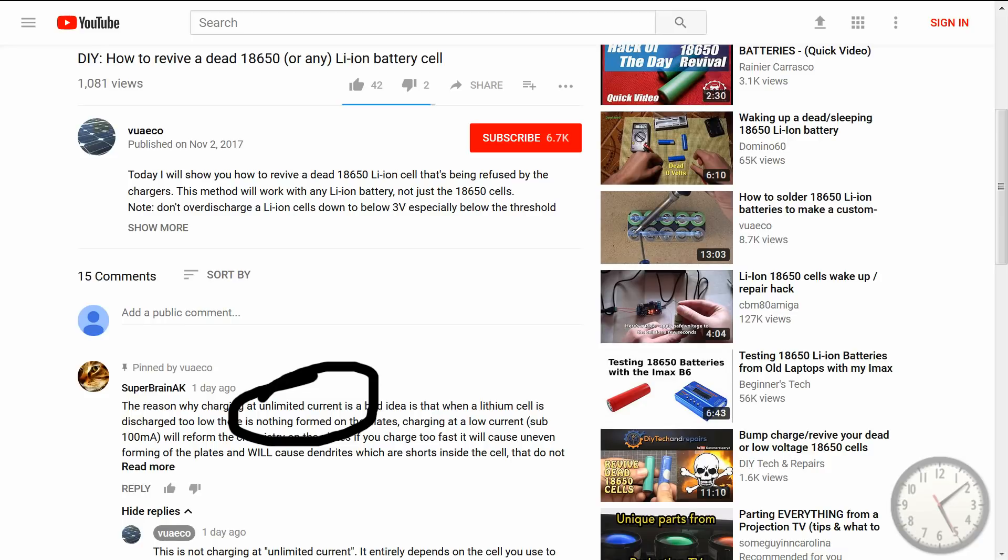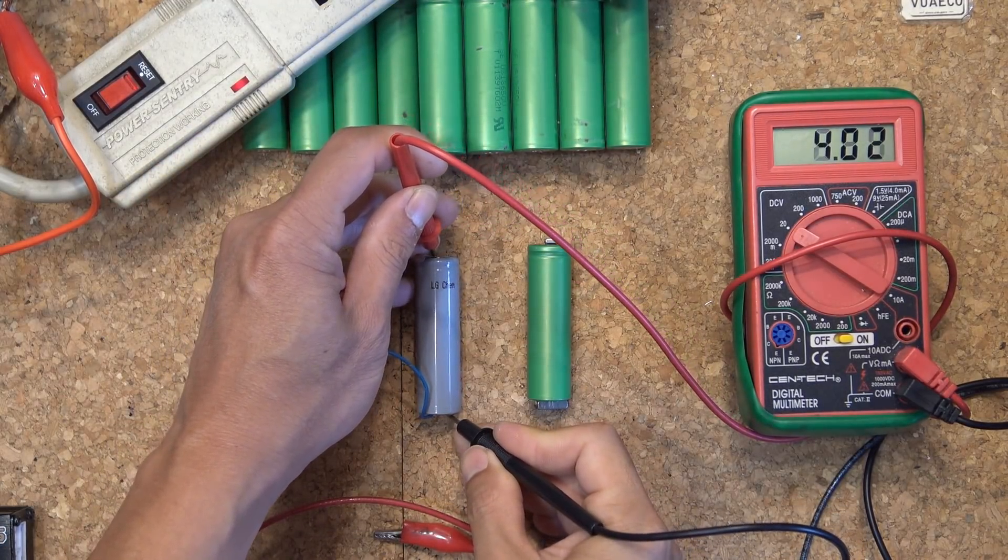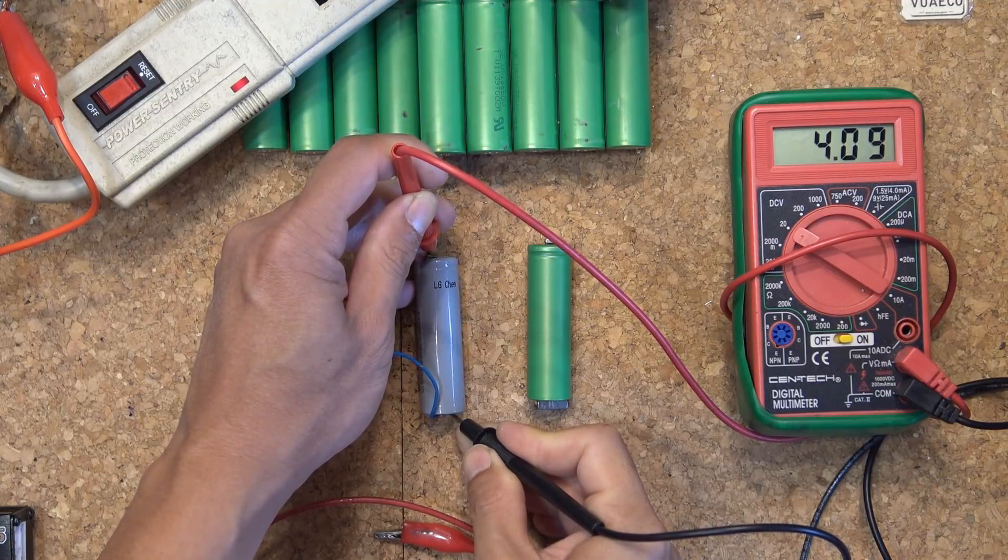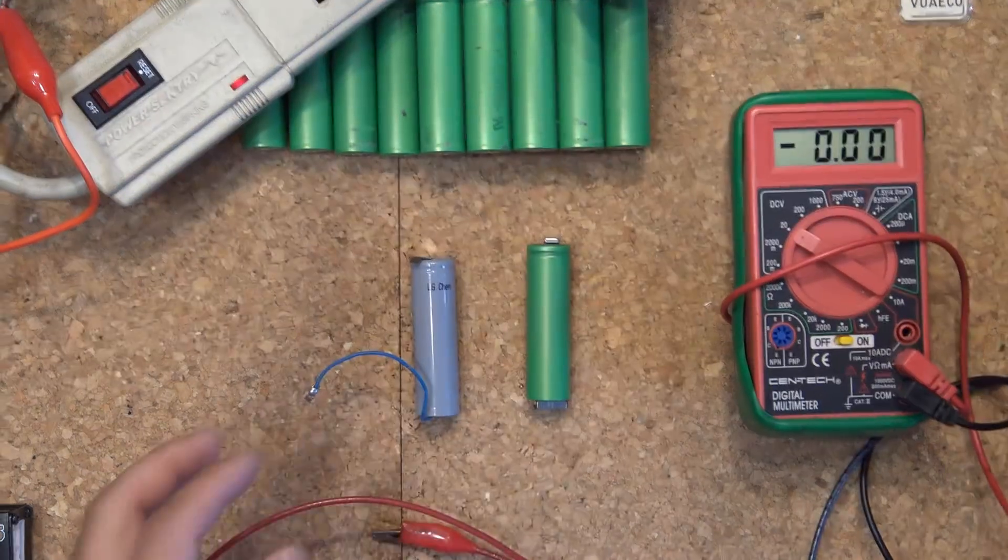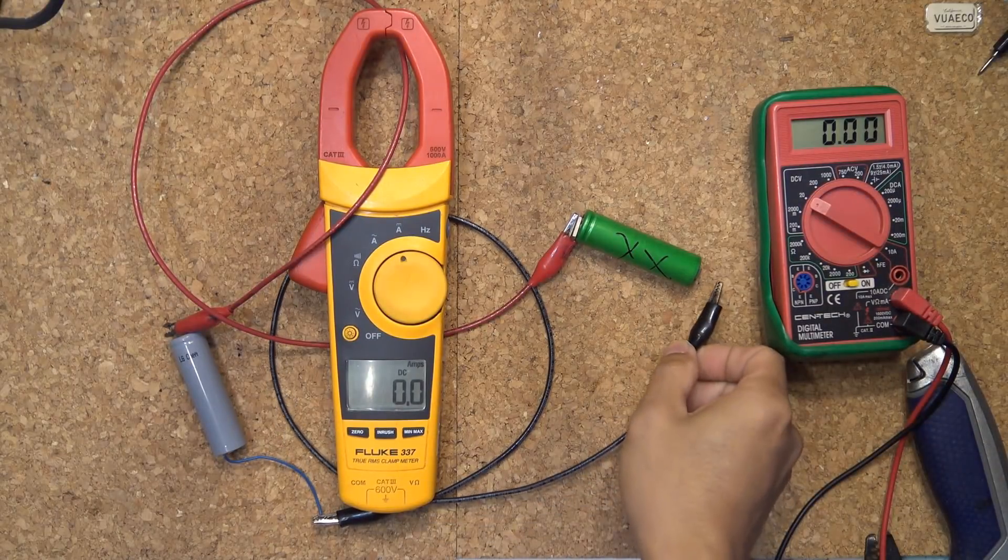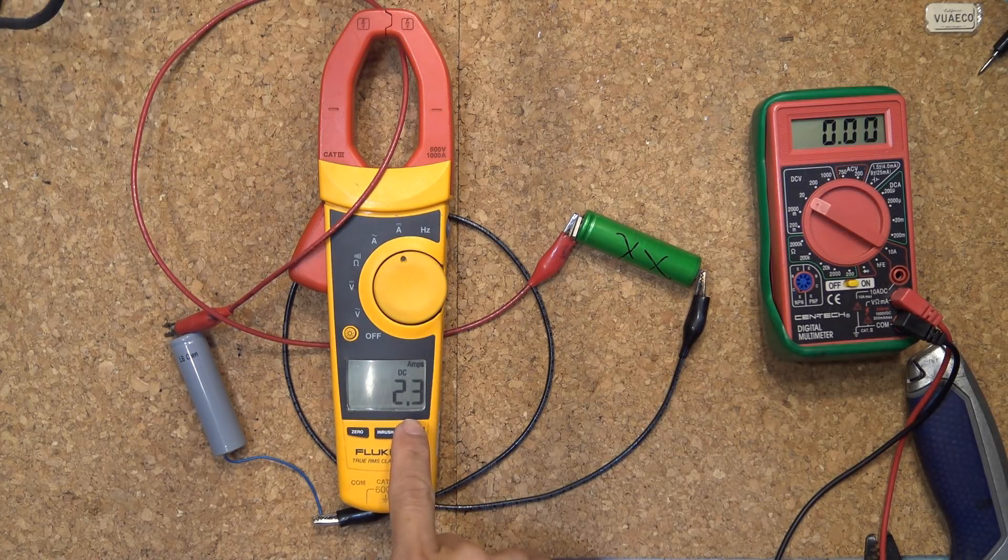Someone put in a comment section saying that I was charging these batteries with unlimited current. I did clarify that it is not unlimited current, but it depends solely on the battery you're using to charge a dead cell with. In this case, I used an LG cell salvaged from a laptop battery. This cell has low discharge rate, around 3 to 4 amps continuous. It can handle probably a bit more than that in short bursts, but around 4 amps continuously.